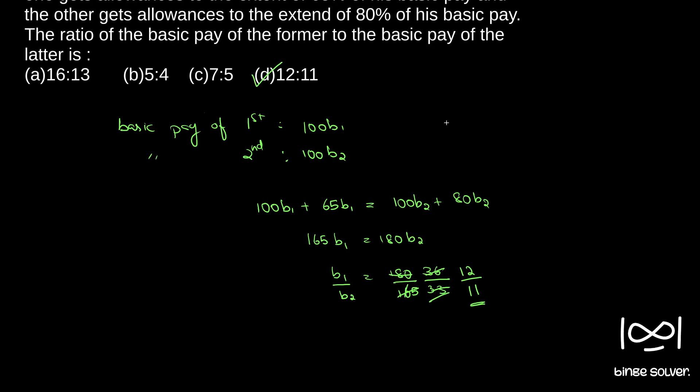In case if you take B1 and B2, this becomes B1 plus 0.65B1 equal to B2 plus 0.8B2. 80% and 65%, this becomes same. So again, B1 by B2 becomes 1.8 by 1.65, or 180 by 165, same result.